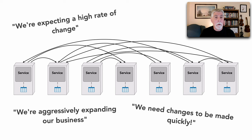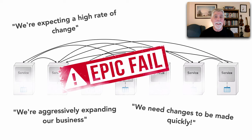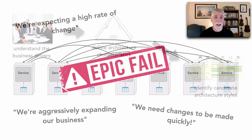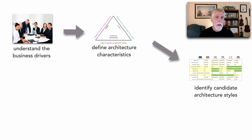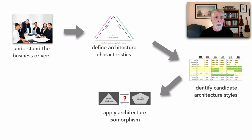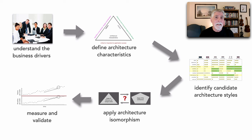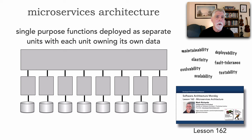In lesson 179 we saw this flow of steps to look for the most appropriate architecture style, and saw how it could lead to an epic failure. The shape of the problem involved expecting a high rate of change, needing those changes done quickly, and aggressively expanding the business. We saw that microservices fits that really well — and yet it ended up becoming an epic failure.